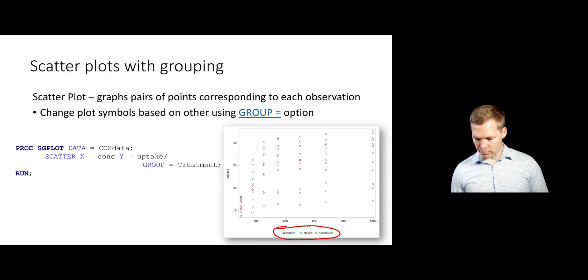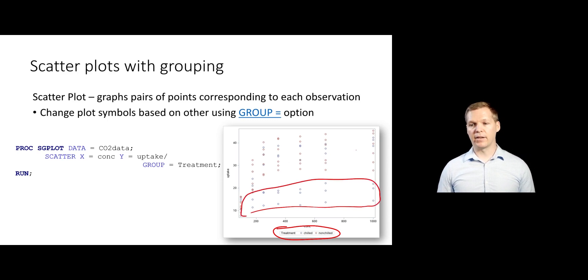And so now we can see that there tends to be more blue down here at the bottom and more red up here at the top, which means, again, that the non-chilled is doing a little bit better in terms of CO2 uptake.